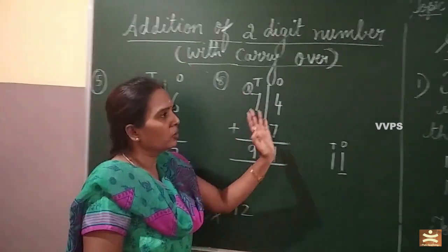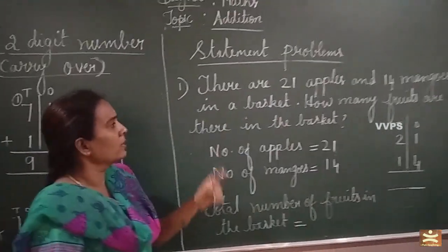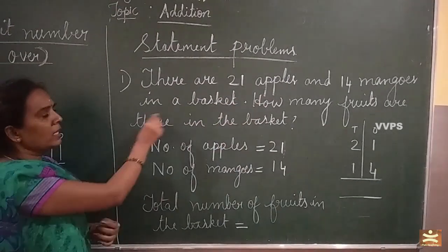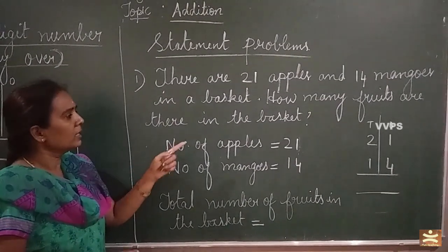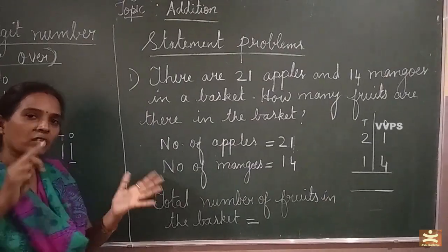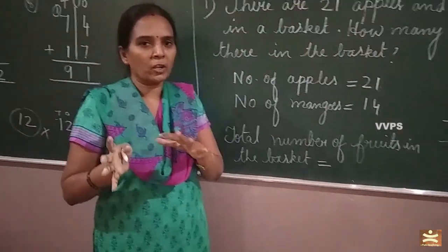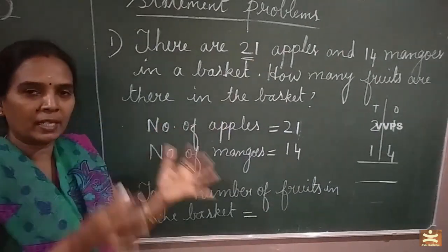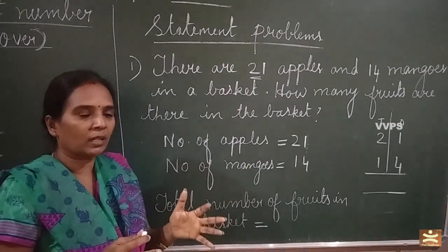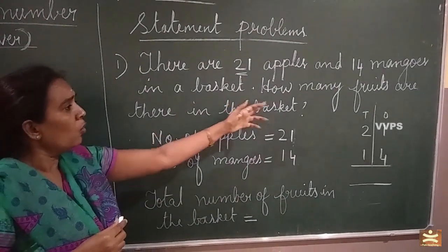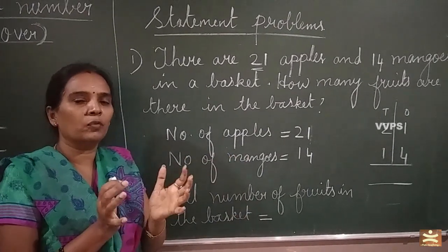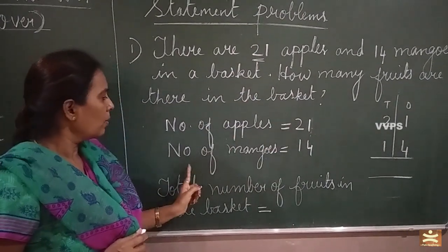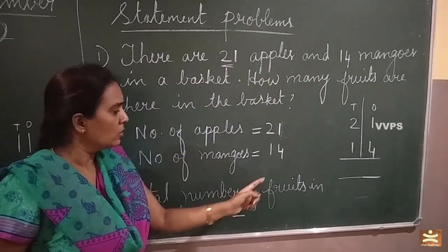Over sum. Now I will go to statement problems children. I will read out the question: there are 21 apples and 14 mangoes in a basket. How many fruits are there in the basket? You have a basket — in that basket you have apples and mangoes mixed together. How many apples? 21 apples. And 14 mangoes. You have to find out how many fruits are there in total. Number of apples: 21. Number of mangoes: 14.